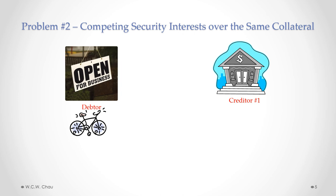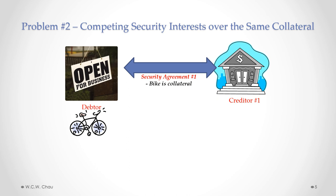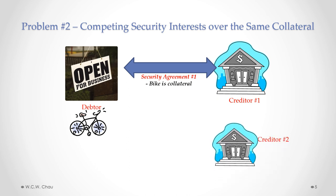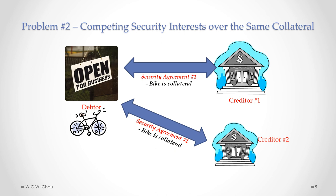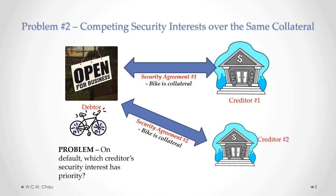Problem Number Two has to do with competing security interests over the same collateral. Again we have our debtor and a creditor — Creditor Number One — and the collateral is the same bike. There's Security Agreement Number One between the debtor and Creditor Number One. We also have Creditor Number Two with Security Agreement Number Two, which also uses the same bike as collateral. The problem raised here is: if there's a default, which creditor's security interest has priority? Who has the legal right to take the bike to recoup on the defaulted loan?